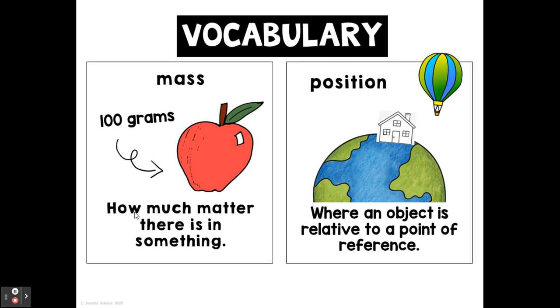And then you write the definition right underneath it: how much matter there is in something. So mass is the amount of matter in the object. The 'position'—the word position in science we use it to mean where an object is relative to a point of reference.